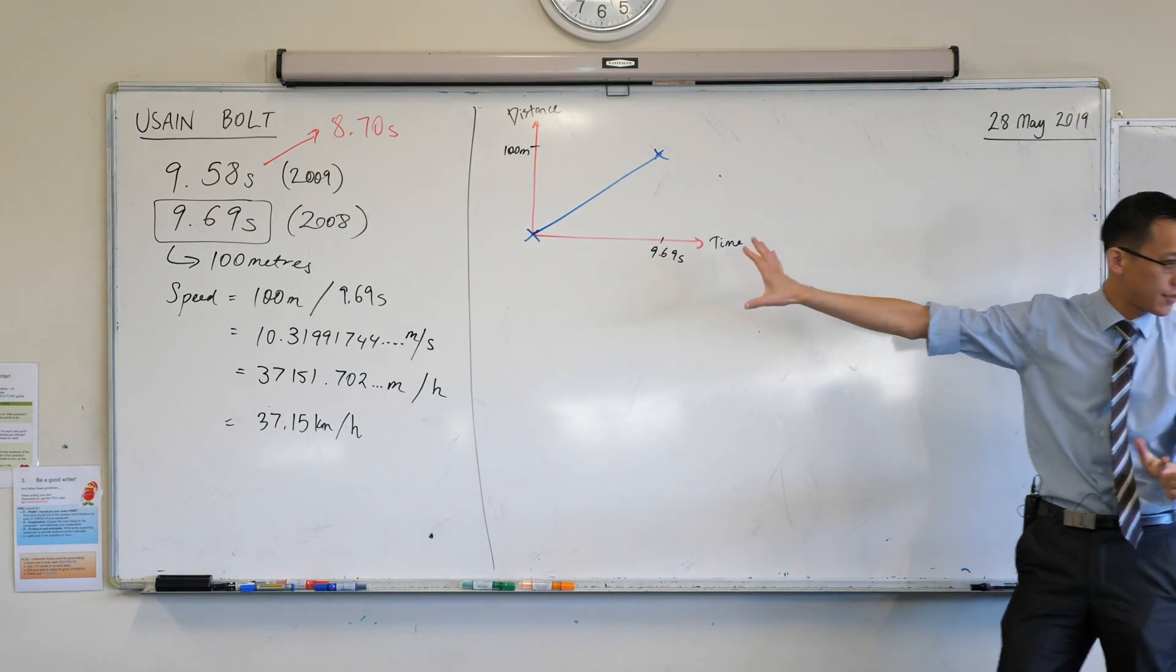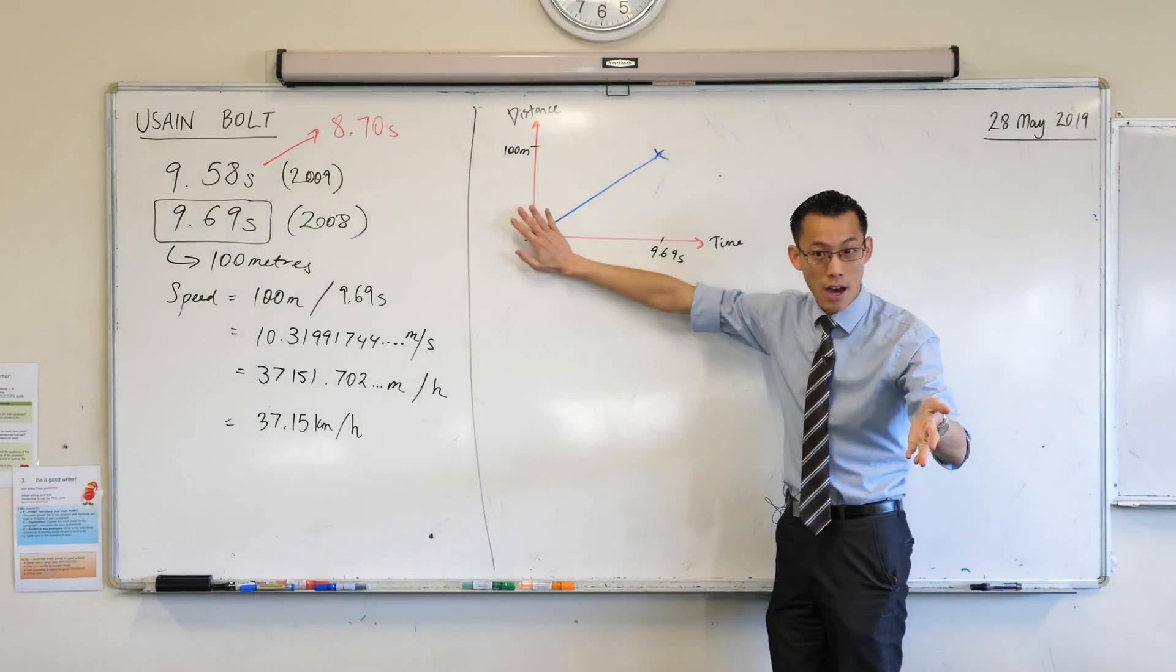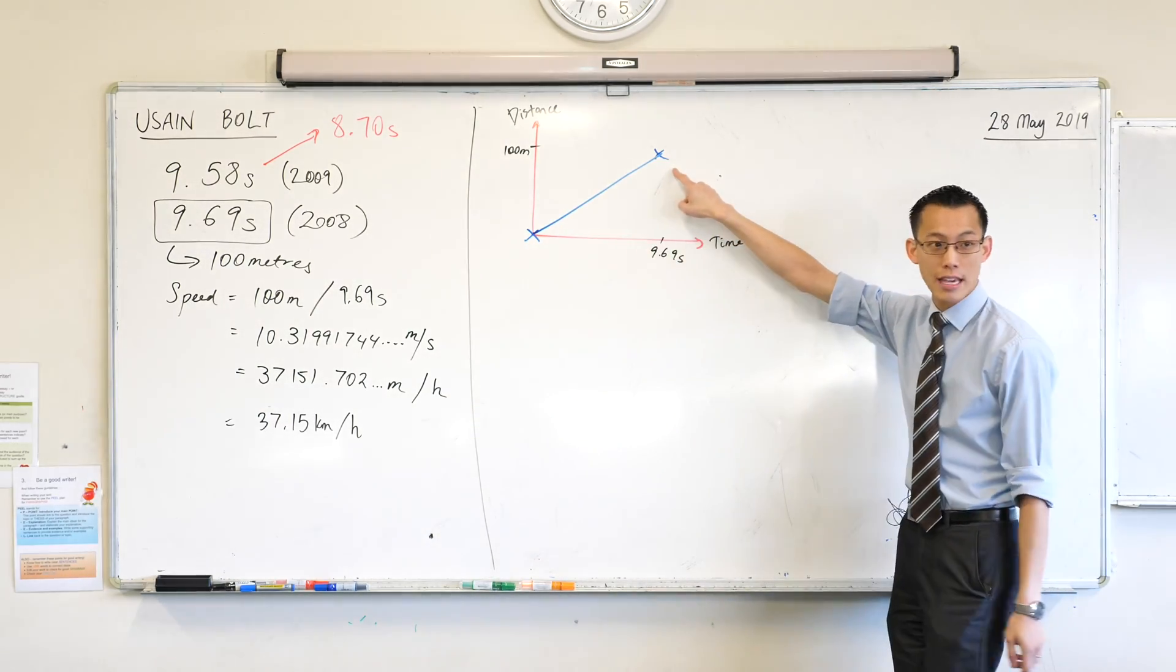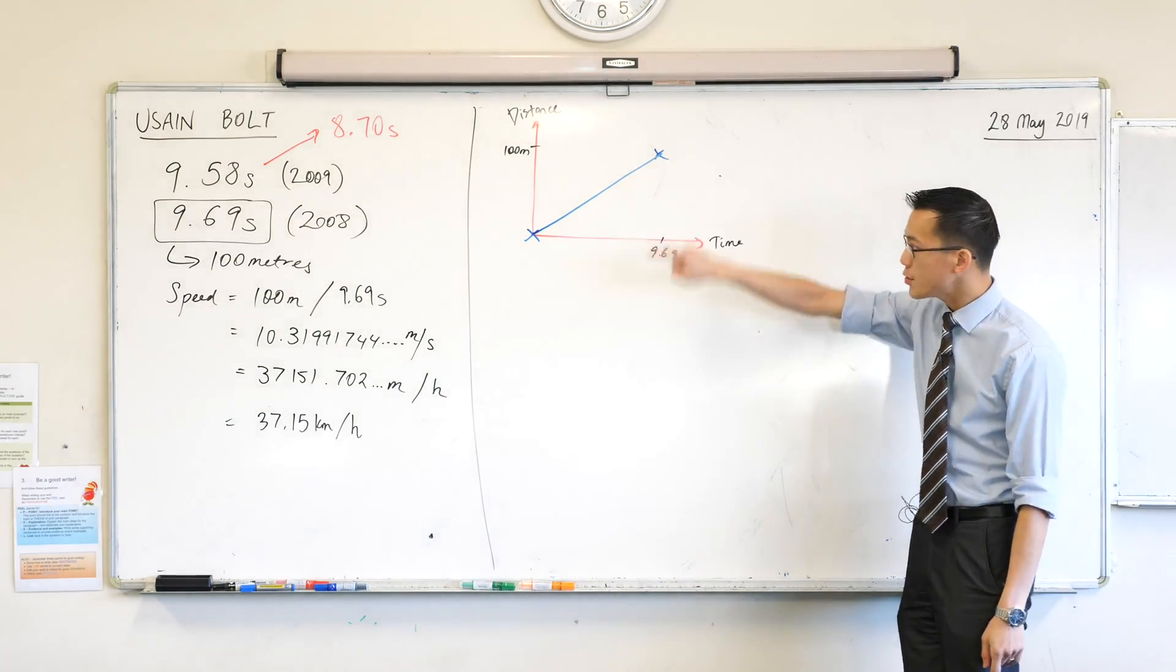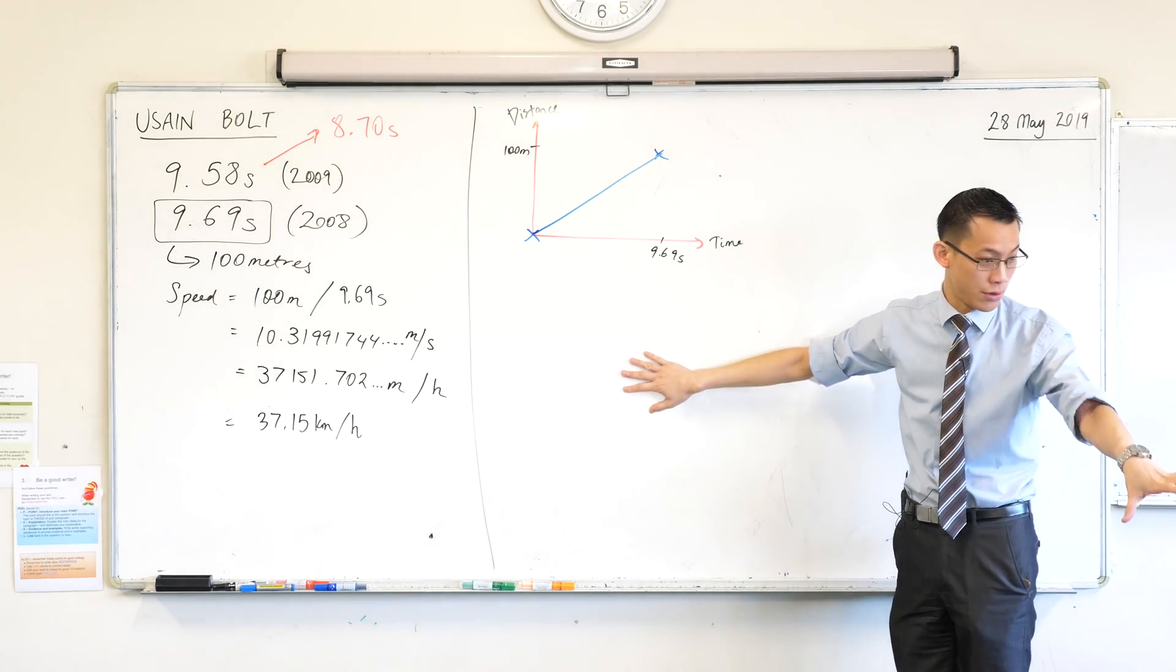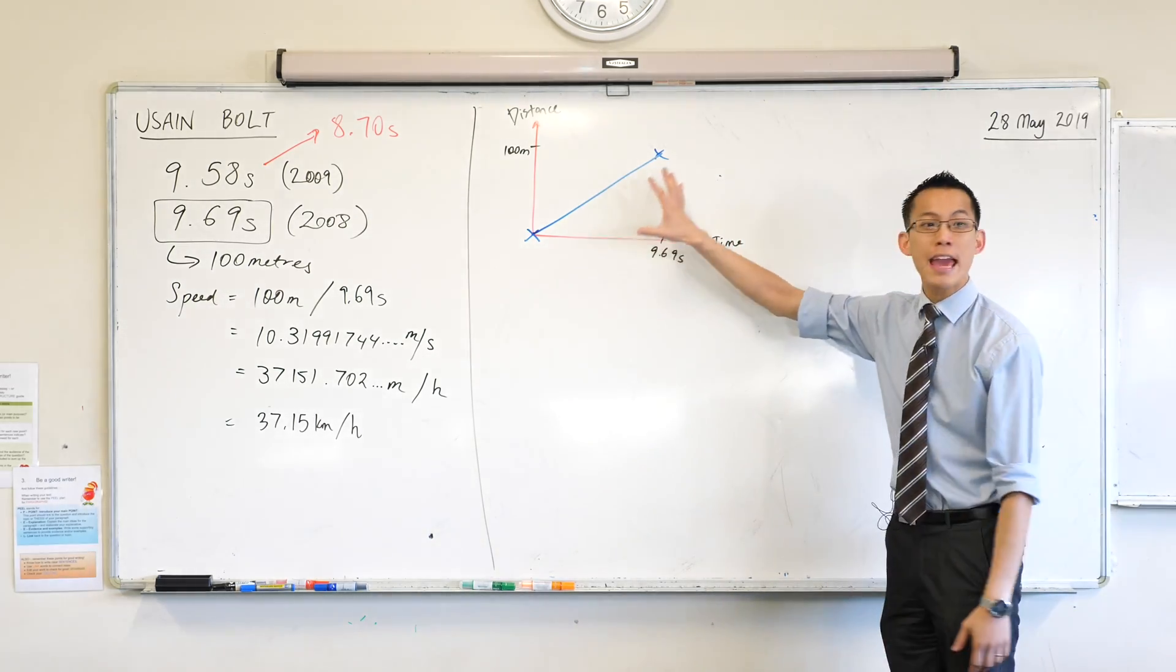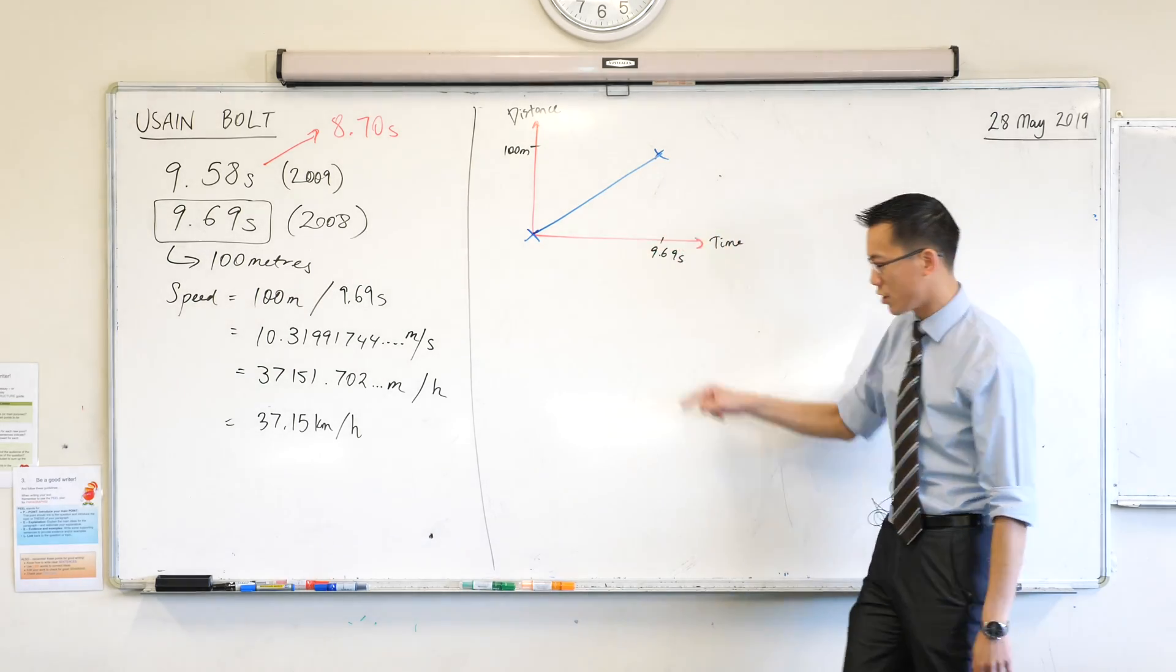So we've got problems here with this graph. Number one, at the start, this is not what's happening, right? It's not instantly going at that speed. And at the end, it's the same problem. So I'm going to draw a new Cartesian plane, but you don't need to. You've got yours there. Can you draw for me? It doesn't have to be perfect. Draw for me a better graph than this one.